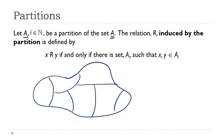The way we define this relation is: two elements x and y are related if and only if there exists a set in the partition such that both x and y are in that set. So two points in the same partition element are related, while points y and a in different elements would not be related.